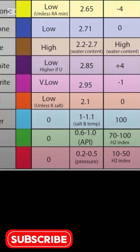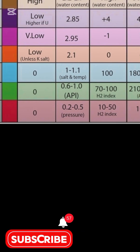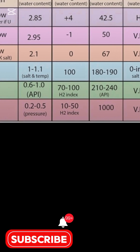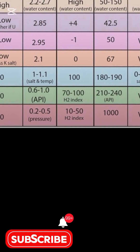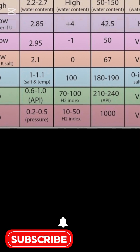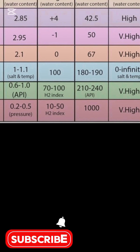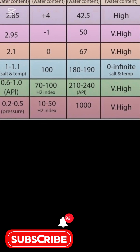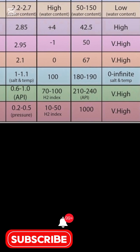Fluids like oil and gas have distinct density and neutron porosity values. Gas shows very low densities of 0.2 to 0.5 and high acoustic slowness of 1000 microseconds per foot.